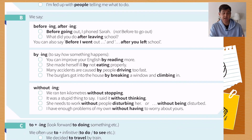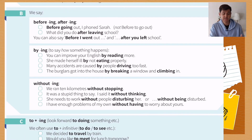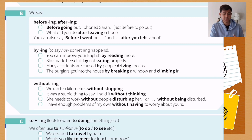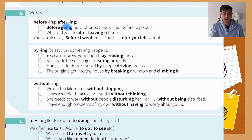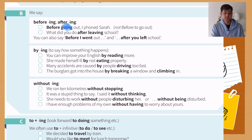I hope you understand Section A. Now we move on to Section B. We say 'before -ing' and 'after -ing.' For example, 'Before going out, I phoned Sarah' — not 'before to go out.' And 'What did you do after leaving school?' So 'before' plus verb -ing, and 'after' also plus verb -ing.